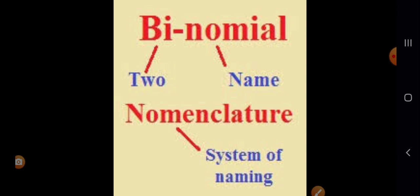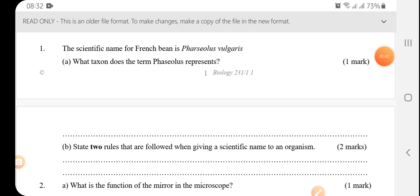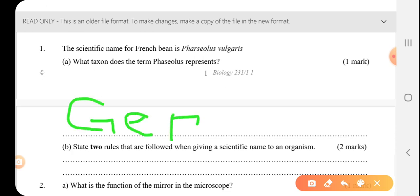So this is just giving an organism two scientific names. So Phaseolus represents the genus. Let me write it down. Genus, G-E-N-U-S.